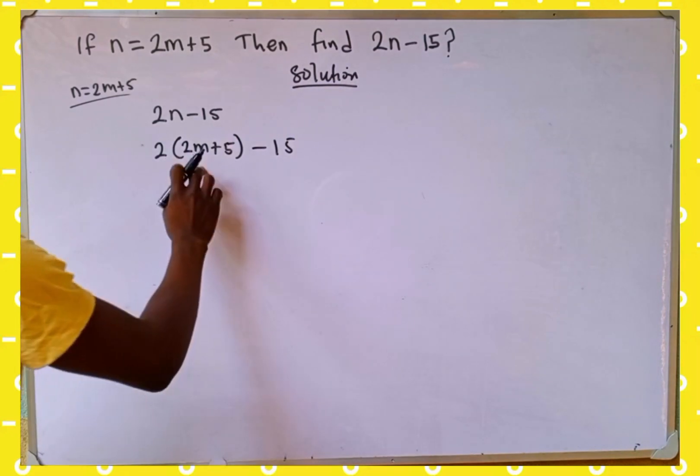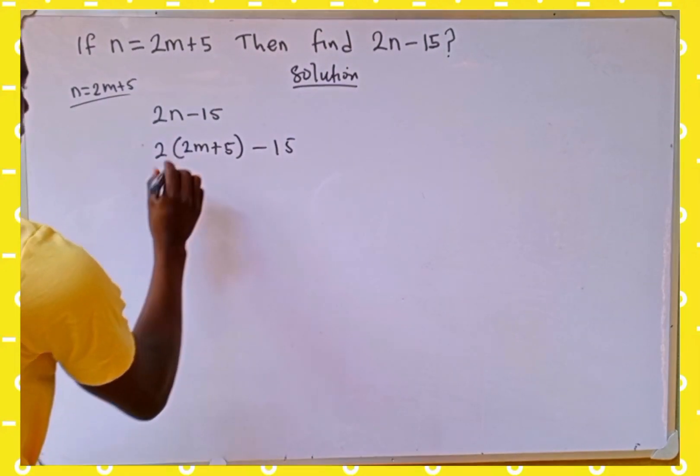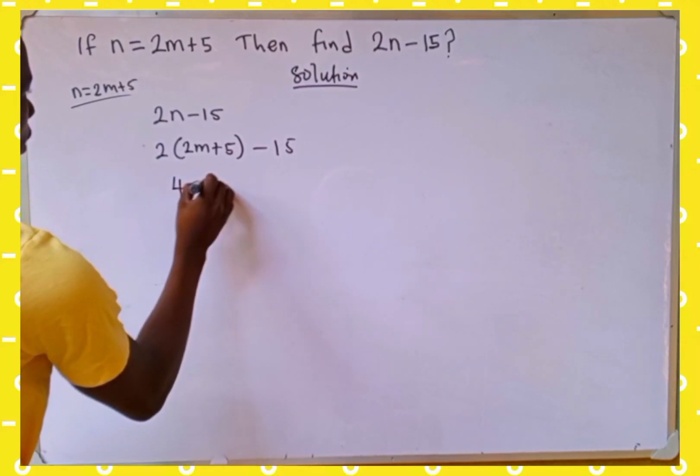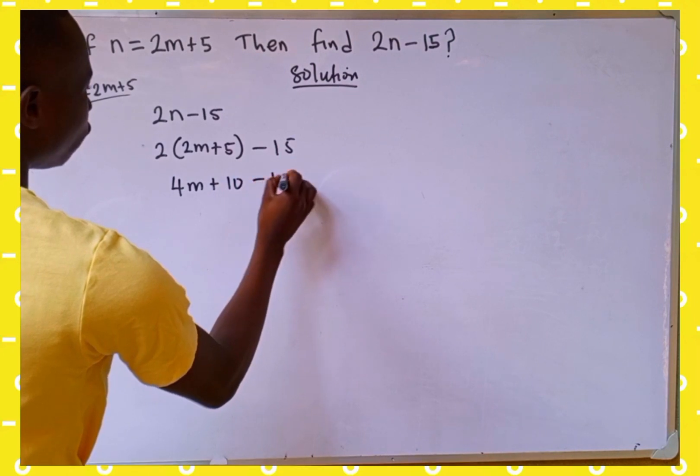Now the next thing we are going to do is distribute 2 into this bracket. 2 multiplied by 2m is going to give us 4m, then plus 2 multiplied by 5 is going to give us 10, then minus 15.